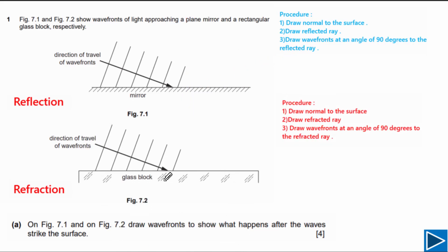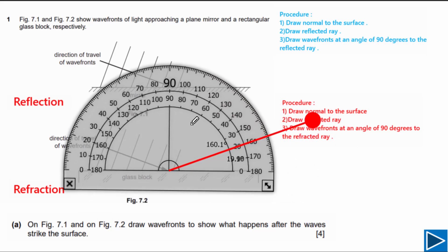For the second part, we draw refracted wave fronts on figure 7.2. The steps are: first, draw the normal to the surface; second, draw the refracted ray; and third, draw wave fronts at 90 degrees to the refracted ray. Again, I will use a solid line for the normal, but use a dotted line in your exam. Here is the normal line, perpendicular to the surface.